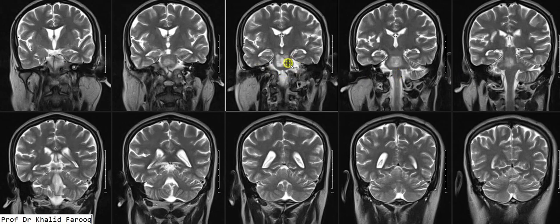We can also see ischemic changes involving the right basal ganglia extending into the right periventricular region. The corpus callosum, frontal horns of the lateral ventricle, third ventricle, and both thalami are unremarkable. The medulla oblongata and midbrain are normal.